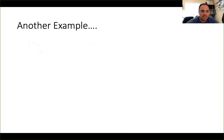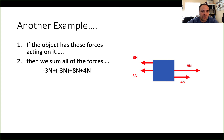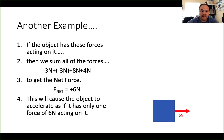Here's another example. I have an object with several forces acting on it, and I want to know if it's going to accelerate. I can figure that out by adding up all the forces including their directional components — using negative for leftward forces and positive for rightward forces. When I find the total sum of those forces, I get positive six newtons. So the net force on this object is six newtons to the right, and this object is going to act as if that is the only force acting on it. Because there is a net force in the rightward direction, this object will accelerate to the right.